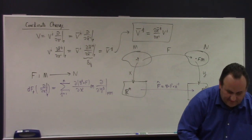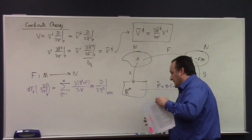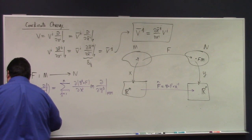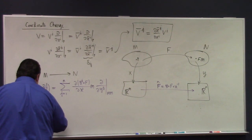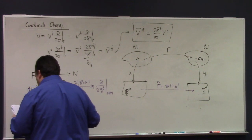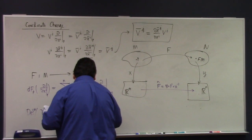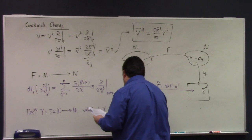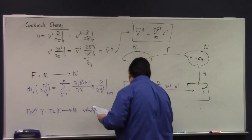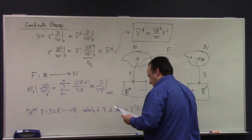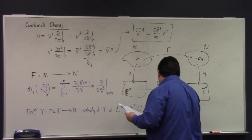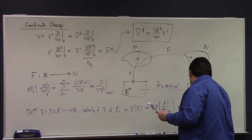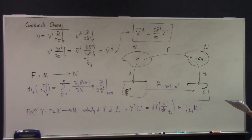Skipping past the tangent bundle momentarily — we'll circle back — there's just a page on velocity vectors of curves. For γ: J → M, you define the velocity γ'(t₀) to be the differential of γ acting on d/dt at t₀, and that is an element of the tangent space T_{γ(t₀)}M.